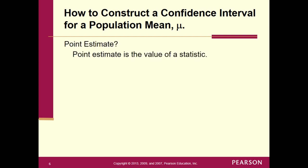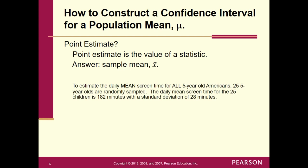The point estimate is the value of the statistic. Since we're creating a confidence interval for the population mean, a good place to start would be your sample mean — x-bar. That will be your point estimate, the value of x-bar. Here's the problem again — see if you can pick out what x-bar is.